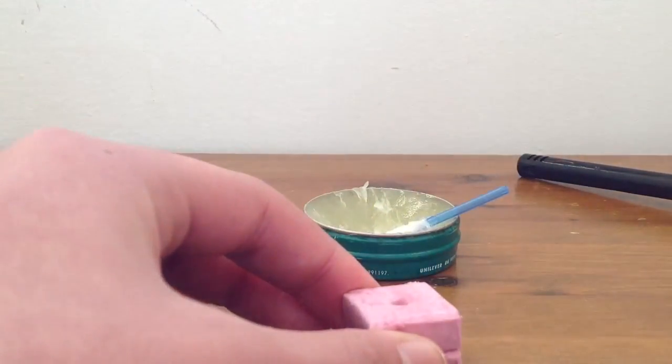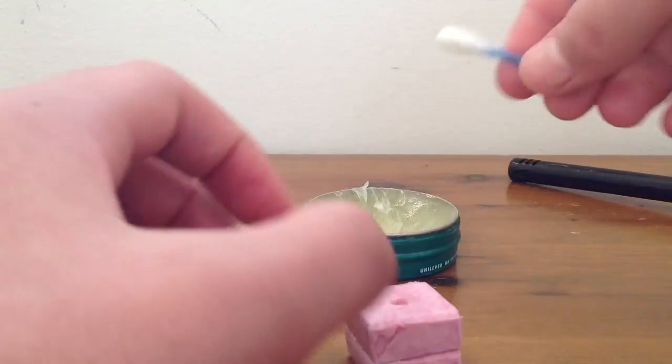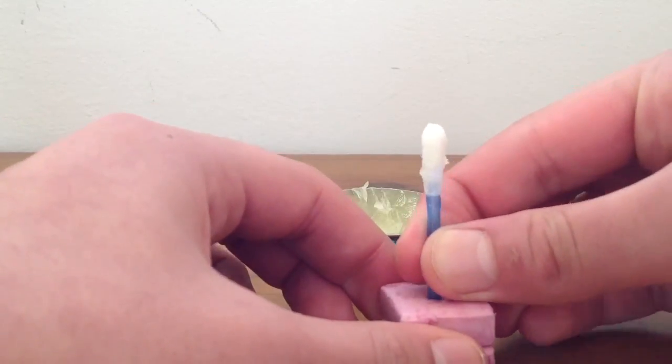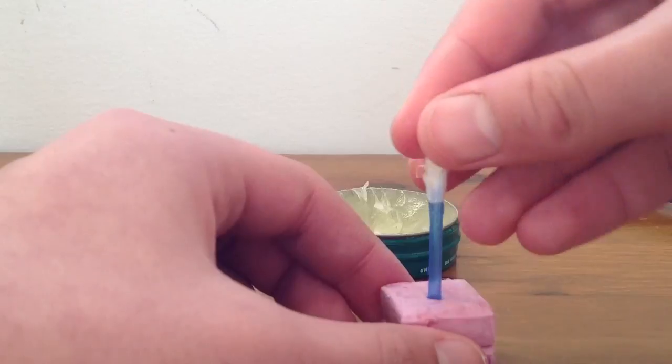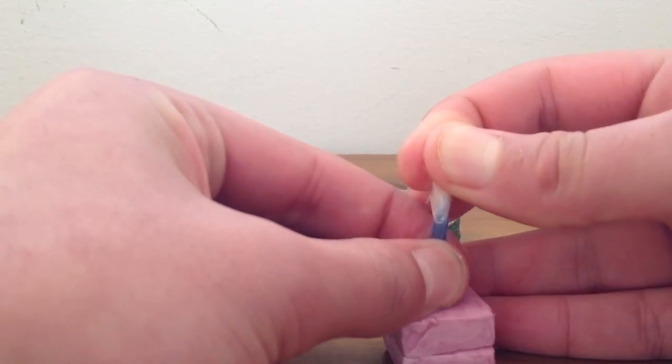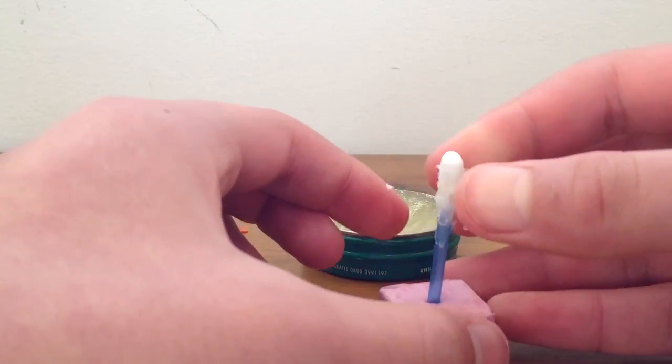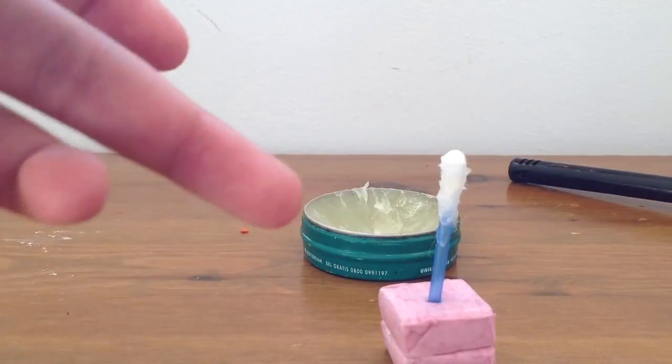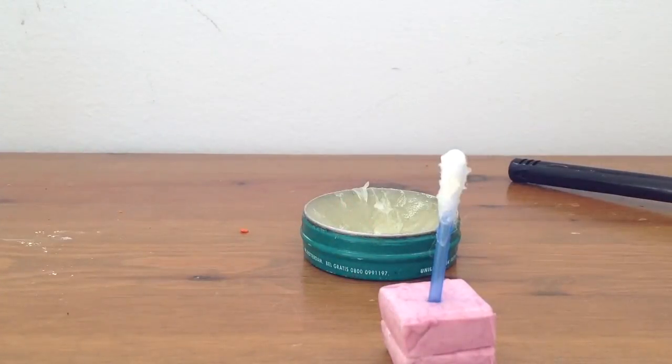So what you do is you get the Vaseline coated earbud and then you put it inside and then you put pressure down on it. Now it's dropping down and then it should look like this. If you wanted it stronger you can make a bigger hole with the scissors so it can go down even more so it can burn longer.